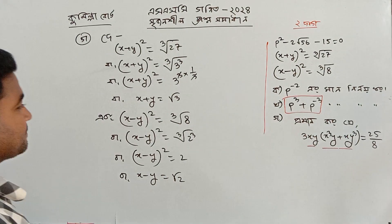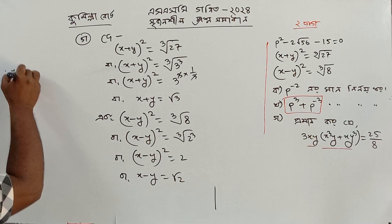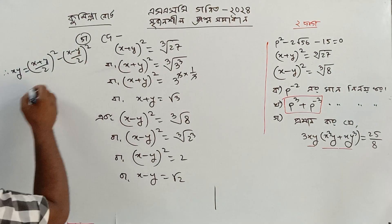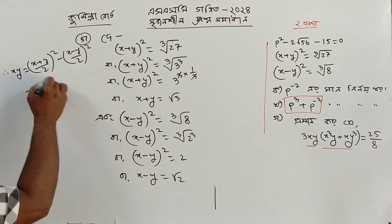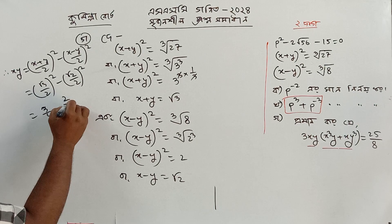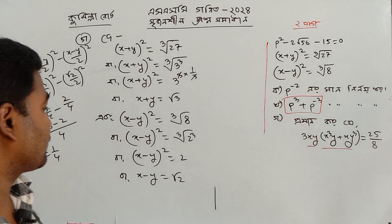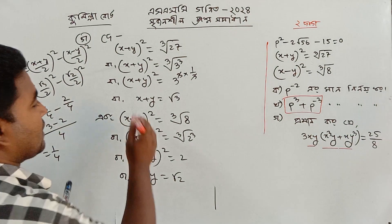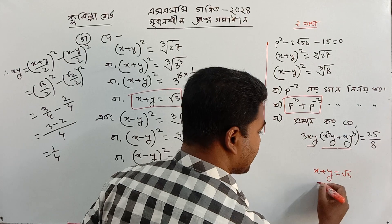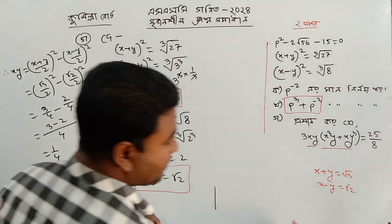2 x plus y whole square is equal to cube root of 9. For x and y: a plus b by 2 whole square minus the process term, which is about root 3 by 2 whole square. That gives root 2 by 2 whole square — so 3 by 4 and 2 by 4. That means 1 by 4, so xy equals 1 by 4.